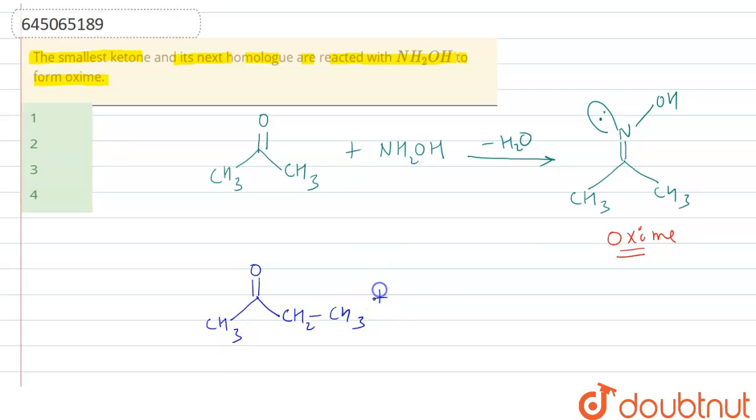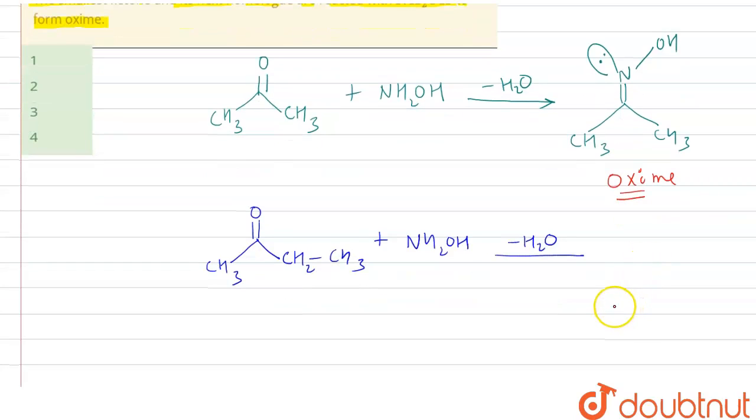When it reacts with NH2OH, loss of water molecule will occur and we will get this type of oximes. This oximes will have CH3 double bond, and here we have OH, here we have lone pair, and in this position we have C2H5 ethyl group.